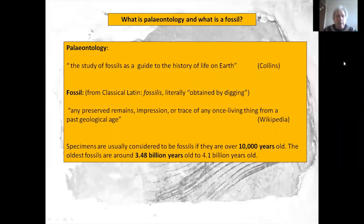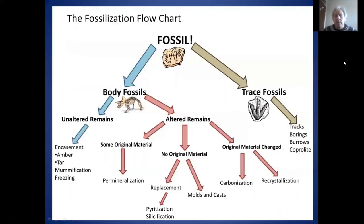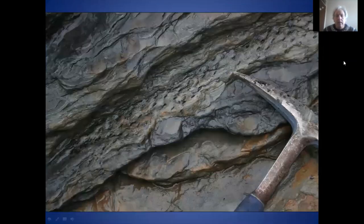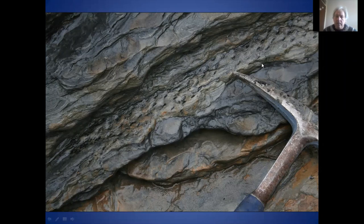We'll discuss the subject of paleontology and what a fossil actually is, before going on to describe how fossils are formed and what different methods there are for preservation of living organisms on earth. Generally speaking, we attempt to find fossils in sedimentary rocks. This spotty area here is called Stigmaria, which is the remains of a root of a tree from the Carboniferous. Sedimentary rocks are very good for preserving organisms.